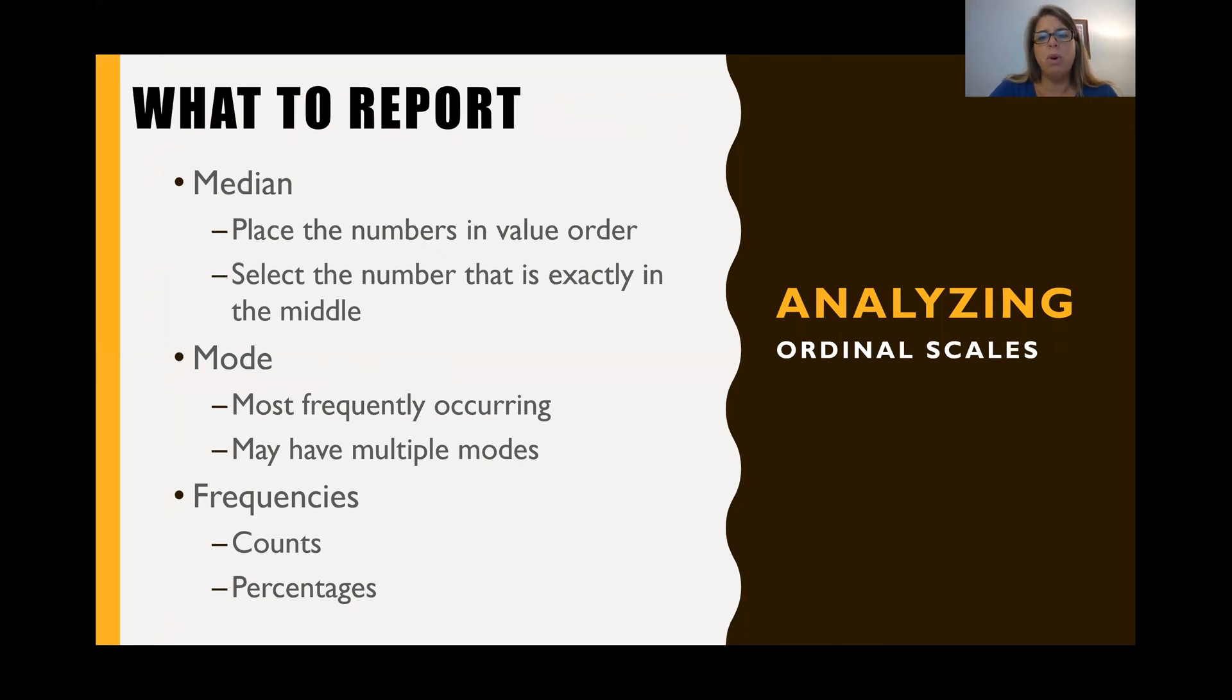So what do you report? What do we analyze with ordinal scales? There are three things that we report. First, a median. And so this is more than if you remember from the nominal video, we could only report the mode and frequency. So now we've added another level of reporting statistics. And we can report median now. And median is simply, if you place all the numbers in value order, then you take the one that's exactly in the middle, and that is your median.